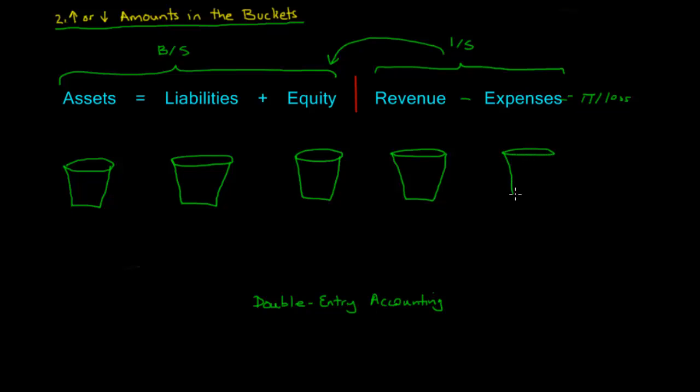And as I mentioned, whenever we do journal entries, which we'll look at later, it has to impact two sides in order for everything to balance correctly. But we need to figure out what we mean by increasing and decreasing amounts in the buckets. And this is where you need to know about debits and credits. So we have things called debits, and we have things called credits.